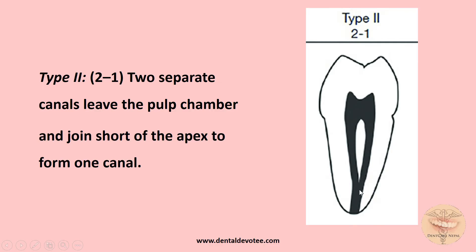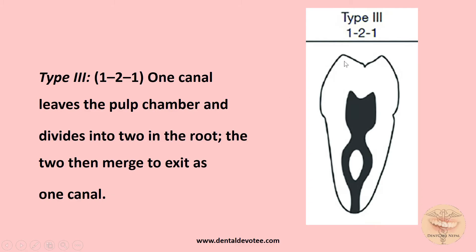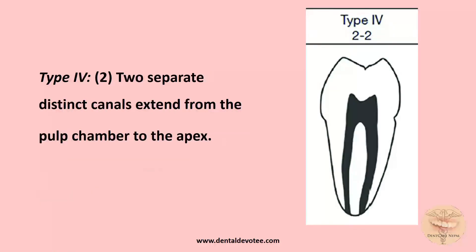Type 3 is a '1-2-1' configuration: one canal leaves the pulp chamber, divides into two in the root, and then merges again to exit as a single canal. Type 4 is simply '2-2': two separate canals extend from the pulp chamber and reach the apex separately.